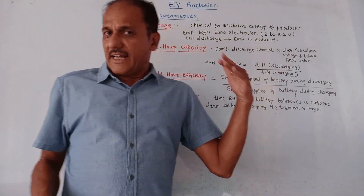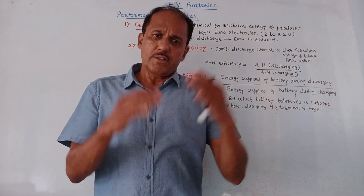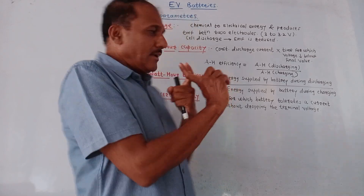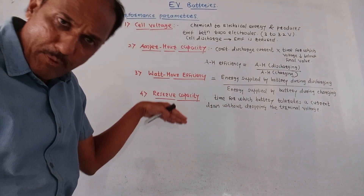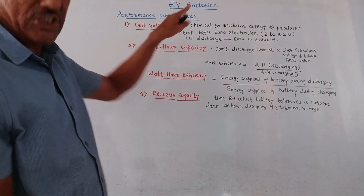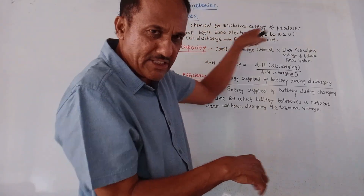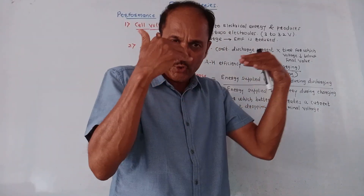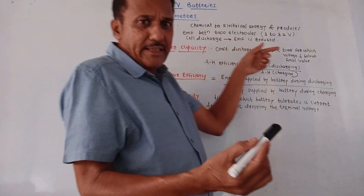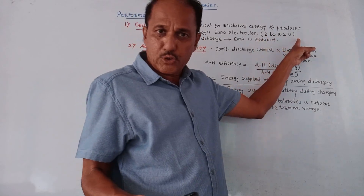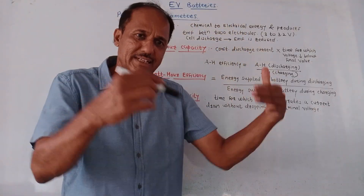The next part is electric vehicle batteries — EV batteries. From an exam point of view, you can expect questions on the performance parameters of EV batteries. The first parameter is cell voltage. This EV battery converts chemical energy into electrical energy and produces EMF — electromotive force. The EMF is between the two electrodes and is usually in the range of 3 to 3.2 volts. When the cell discharges, EMF is reduced; when charging, EMF is increased.